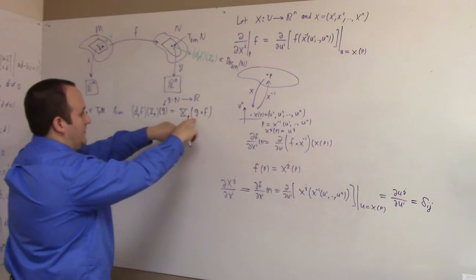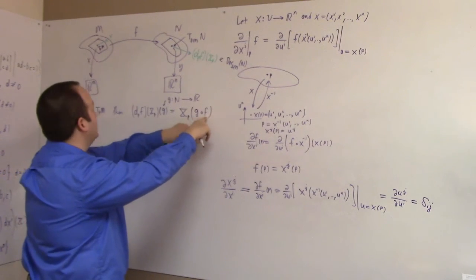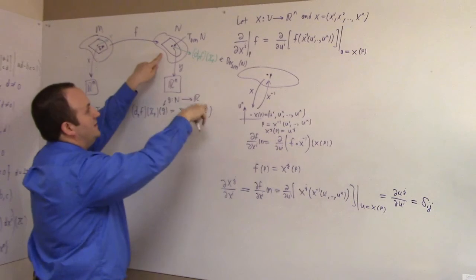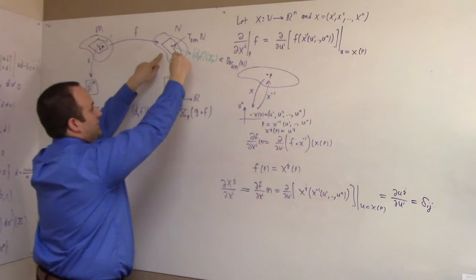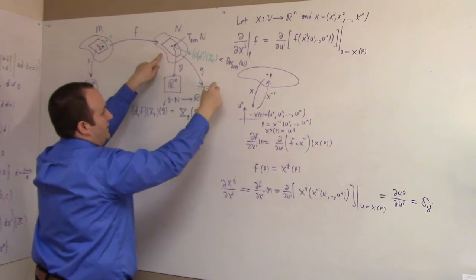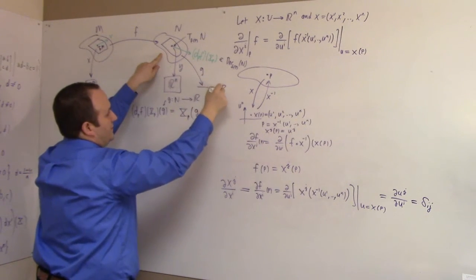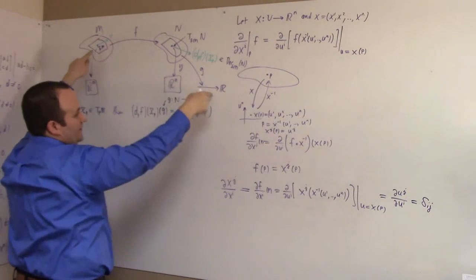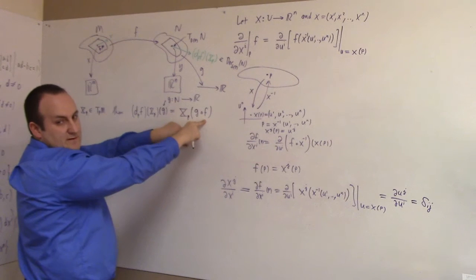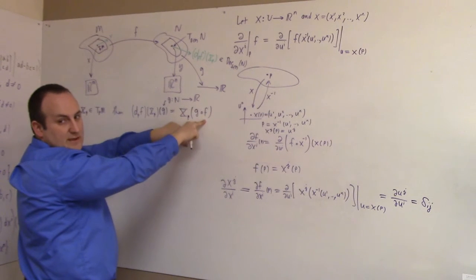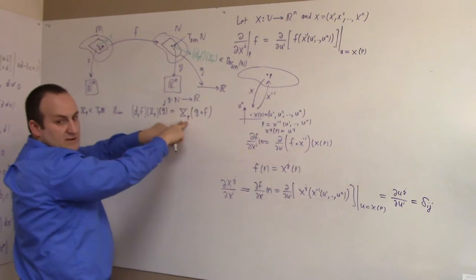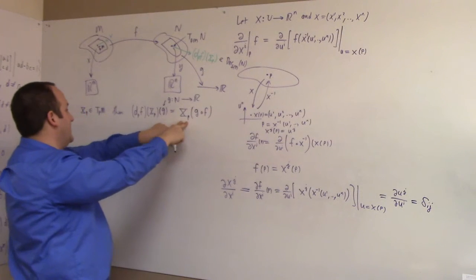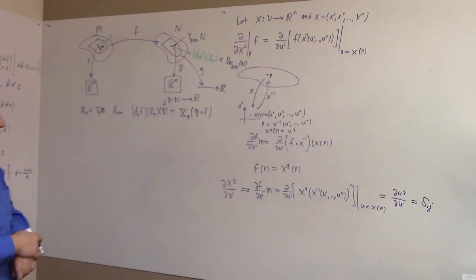Because G — let's start with F. F goes from M to N, and then G goes from N to R. So G composed with F goes from M to R. This is, in fact, a function based at P, which we can feed to the derivation X of P. And that, in fact, is the definition of the differential.